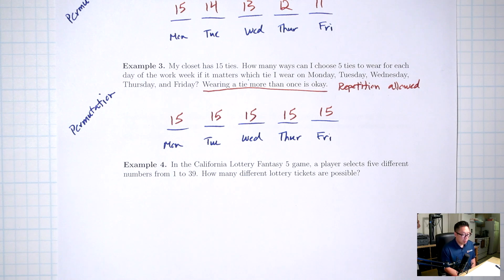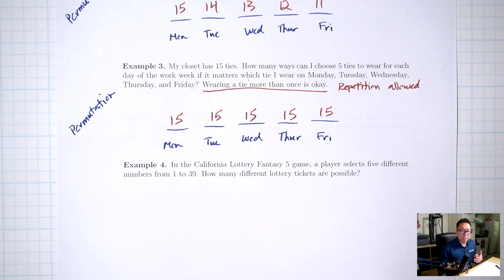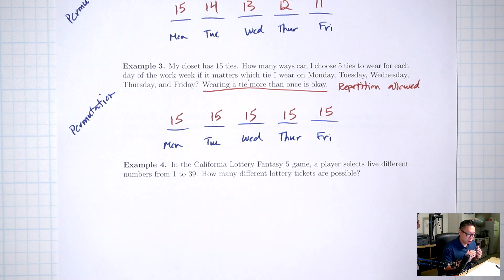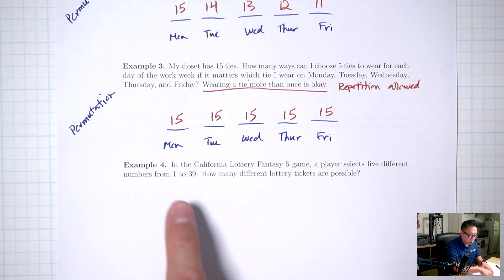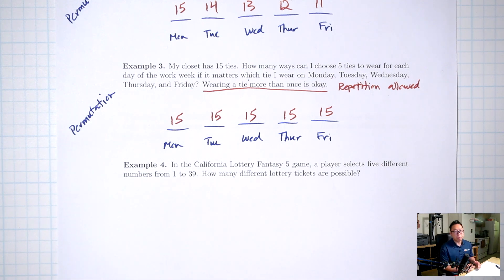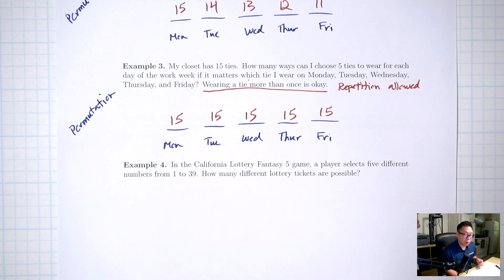Example 2: my closet has 15 pants. How many ways can I choose 5 pants to wear for each day of the week, if it matters which pants I wear on Monday, Tuesday, Wednesday, Thursday, Friday? Because I do care about the order — which pants go on which day — this is a permutation.